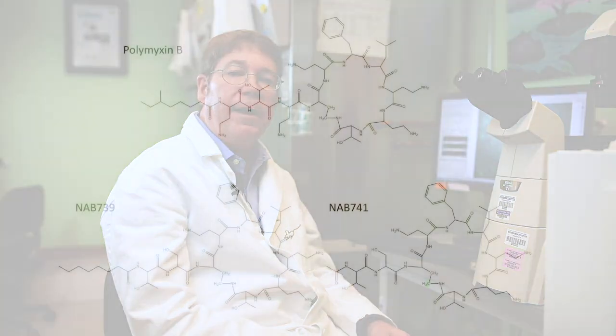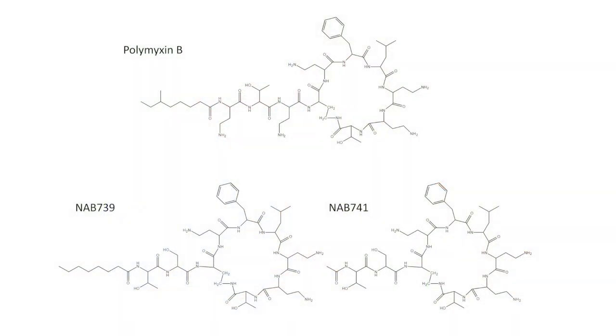We also partnered with Northern Antibiotics, a company in Helsinki, Finland founded by Marty and Timo Vara. They are developing new classes of antibiotics based on polymyxin B structure — namely NAB-741 and NAB-739. Both drugs have been shown to be safe in preclinical studies. NAB-739 remains in preclinical development, whereas NAB-741 was licensed to Spiro Therapeutics and has completed a phase one clinical trial in healthy volunteers. We compared the toxicity of polymyxin B to these Northern Antibiotic compounds and found that we recapitulated the safety seen in patients — NAB-741 and NAB-739 were non-toxic to the kidney chips.